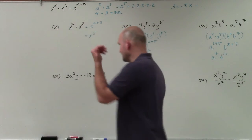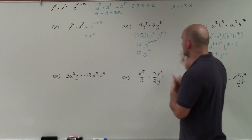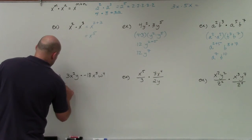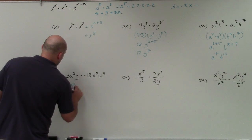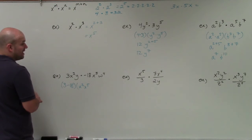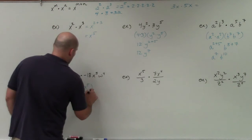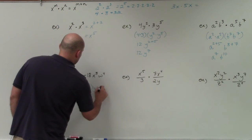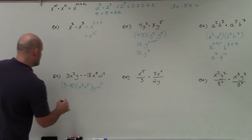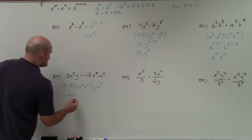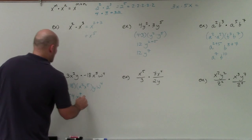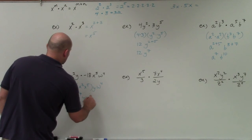Here's one more example — the exact same thing, except now I threw some numbers in front. We're going to group the numbers and group the x's. I have a y and a w, which are not the same, so I'm just going to leave that as y times w to the fourth. So 3 times negative 8 gives the coefficient, x squared times x to the fifth is x to the seventh, and then we have y and w to the fourth.